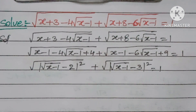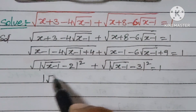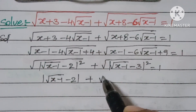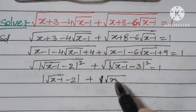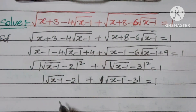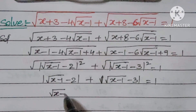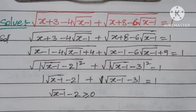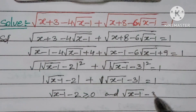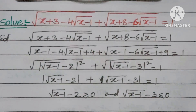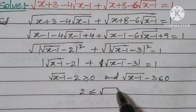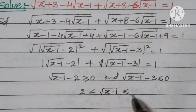Now we can remove the squares using modulus. For the expression to equal 1, we need √(x-1) - 2 ≥ 0, meaning √(x-1) ≥ 2, and √(x-1) - 3 ≤ 0, meaning √(x-1) ≤ 3. From this we can write: 2 ≤ √(x-1) ≤ 3.